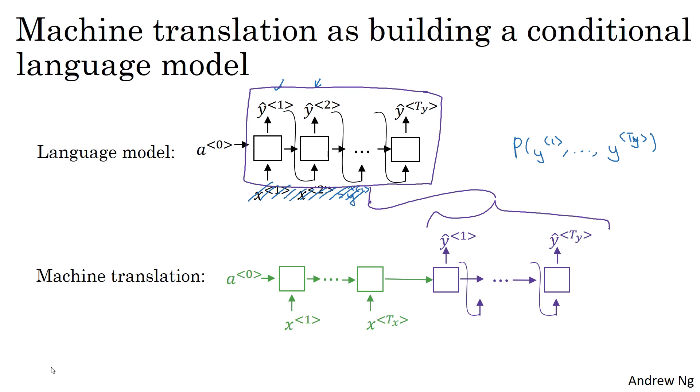And you notice that the decoder network looks pretty much identical to the language model that we had up there. So what the machine translation model is, is very similar to the language model, except that instead of always starting it off with the vector of all zeros, it instead has an encoder network that figures out some representation for the input sentence, and it takes that input sentence and starts off the decoder network with representation of the input sentence, rather than with the representation of all zeros.